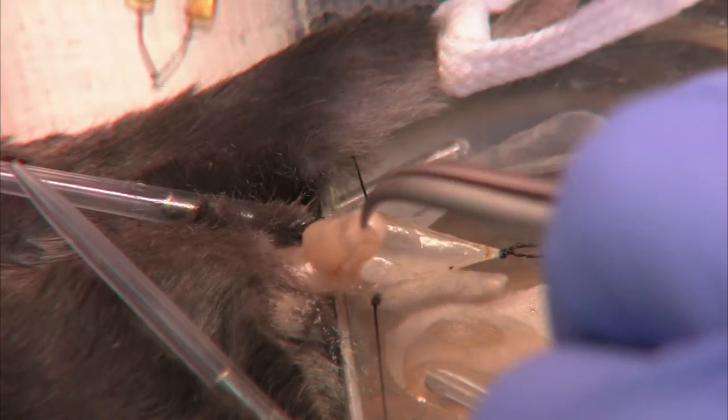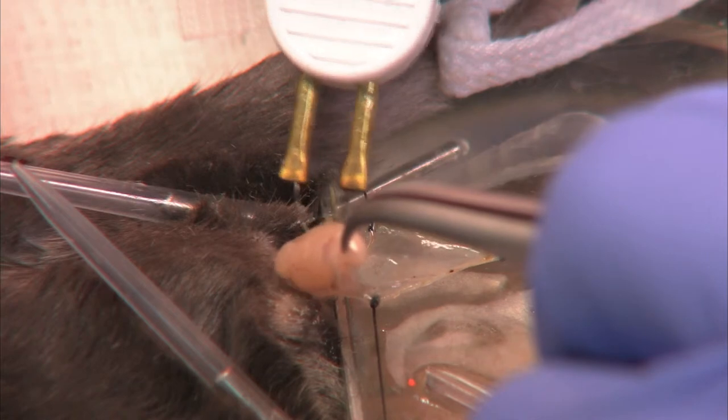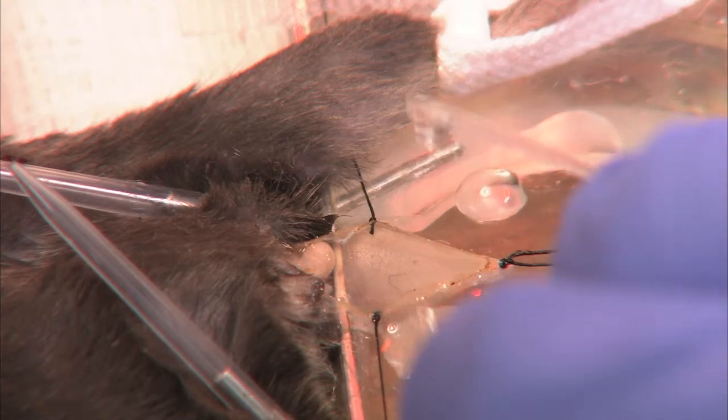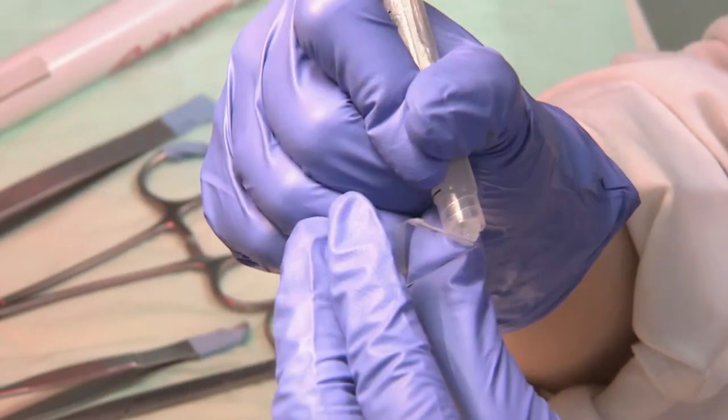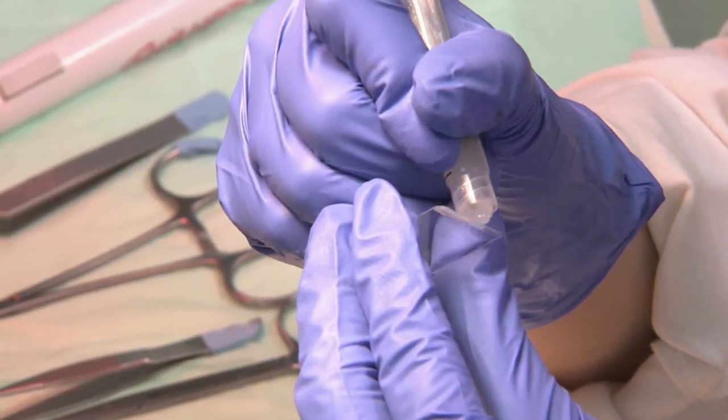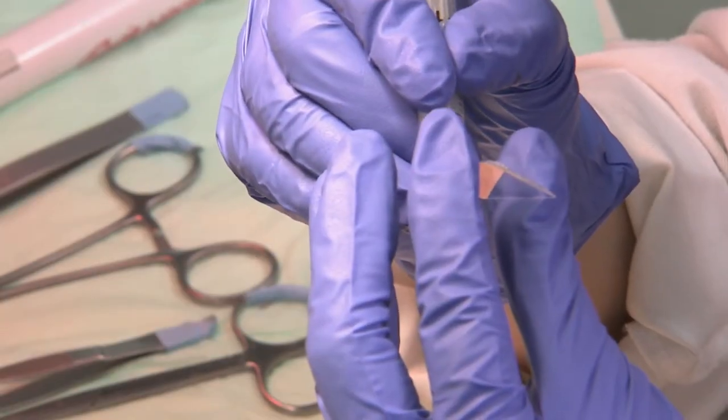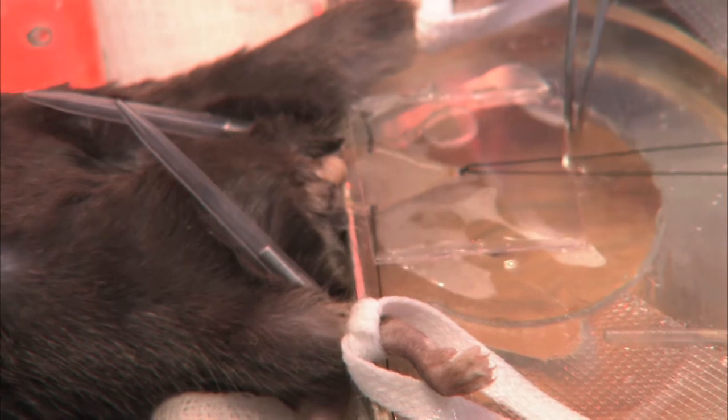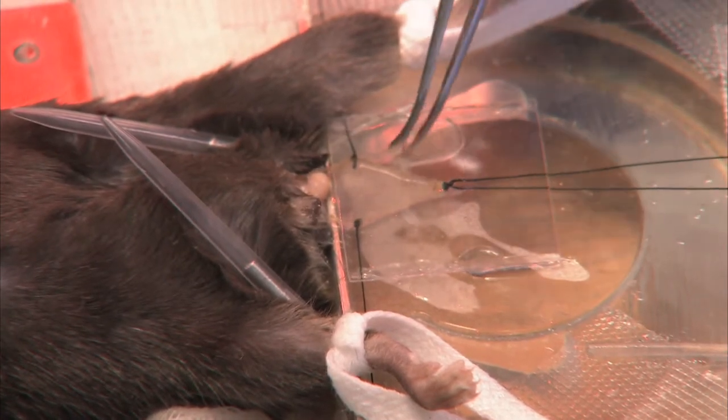Separate the testicle and the epididymis from the underlying muscle and move them into the abdominal cavity. Add a thin layer of vacuum grease to opposite edges of a 22 by 22 millimeter glass coverslip, then cover the exposed muscle with the glass coverslip.